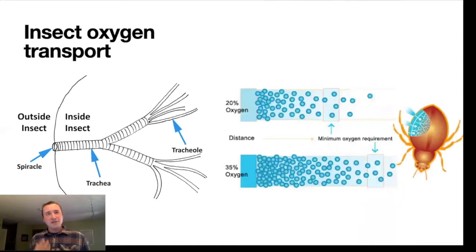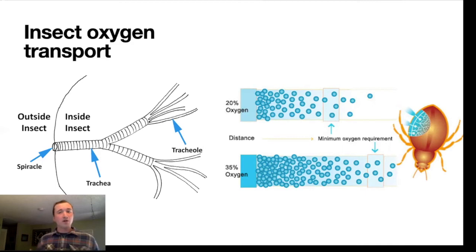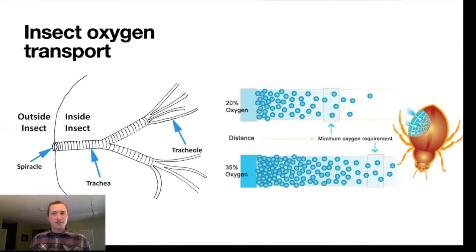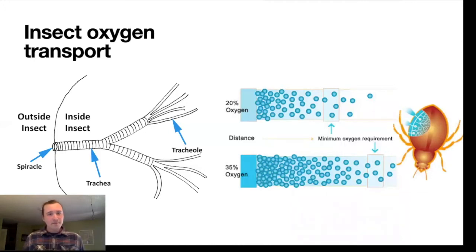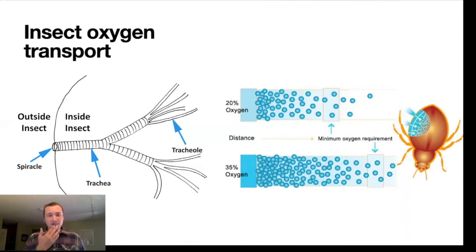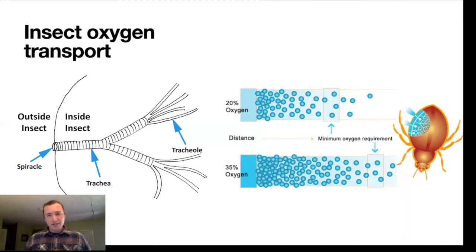Now let me describe how insects accomplish the same task of getting oxygen to their cells for aerobic respiration. Superficially this seems a little like a circulatory system in the sense that there are branching tubes, but that's sort of where the similarities end. Insects do not breathe through their mouths. They instead have holes all along the sides of their body called spiracles.